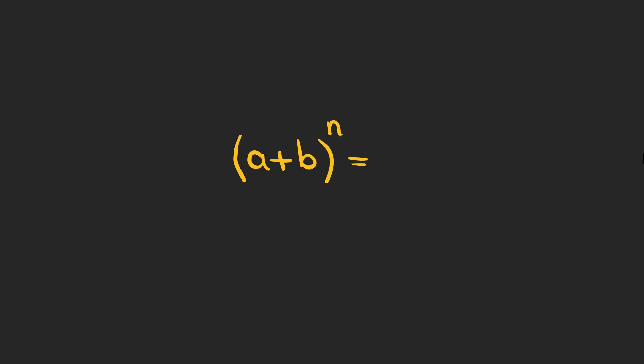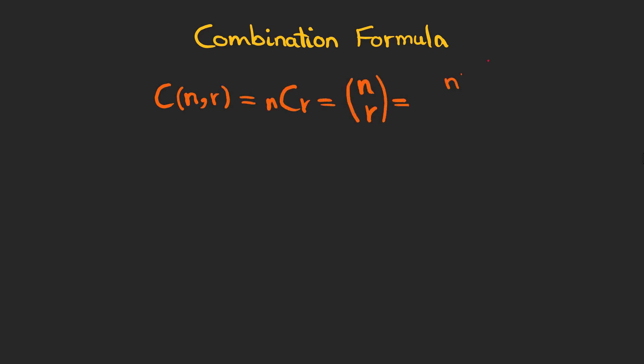Now, you might want to ask if we can come up with a general formula for this binomial expansion. And the answer is fortunately yes, we can. We can use the combination formula to do so. It can be written like this, and it is n factorial divided by r factorial, n minus r factorial.